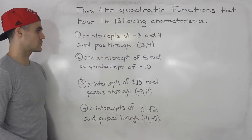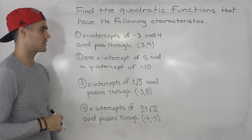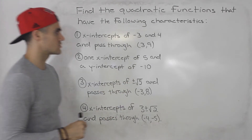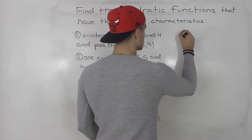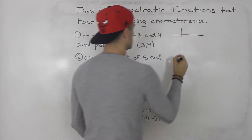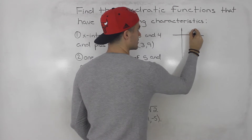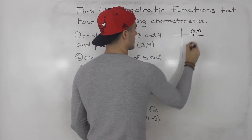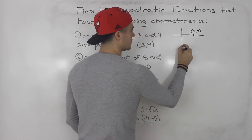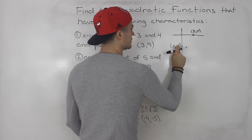Moving on to number two: a quadratic function that has one x-intercept of five and a y-intercept of negative ten. This one is a little more unique because there is only one x-intercept. Let's show it visually. The x-intercept is at (5, 0) and the y-intercept is at (0, -10).